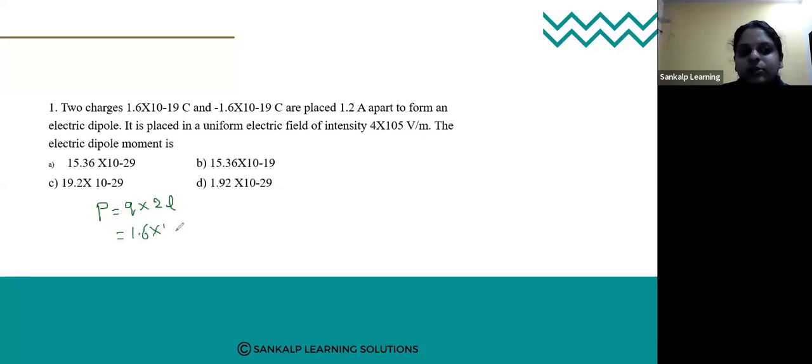So 1.6×10^-19... here the confusion is whether you have to take 2 times that distance or 2l directly. The two charges, one is 1.6×10^-19, the other is -1.6×10^-19, are at a distance of 1.2 angstrom.